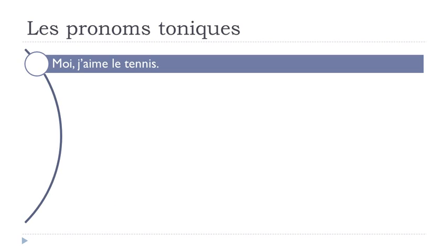I prepared a few examples. The first one: MOI, J'AIME LE TÉNIS. Here you can see you start the sentence with MOI (me), and then you put the pronom personnel JE — take the E away because the verb starts with a vowel — so J'AIME. J'AIME means I like or I love. So basically starting with MOI here, you want to insist on the fact that you really like or love tennis.